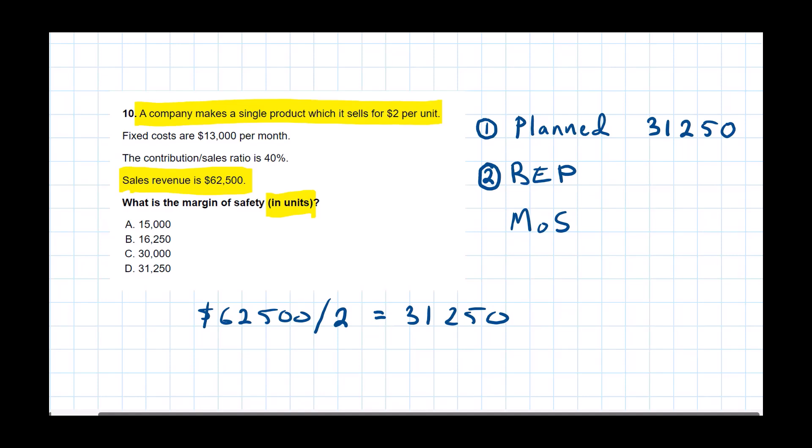Now I see that number here. That's a distractor. It's not going to be that. So that was step one.